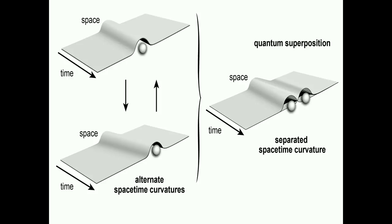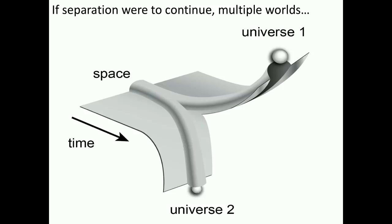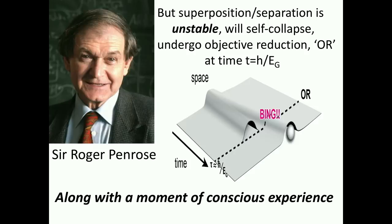So here's the idea again. On the right, you see the quantum superposition of separated space-time curvatures with the particle in two locations at the same time. Now, you might imagine that if this separation were to continue, we'd have multiple worlds. One curvature would go off and form its own universe with its particle. One curvature would form another, and each would evolve its own universe, and we'd have multiple worlds.